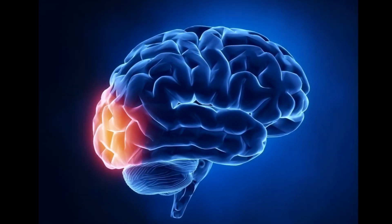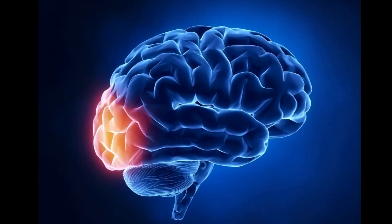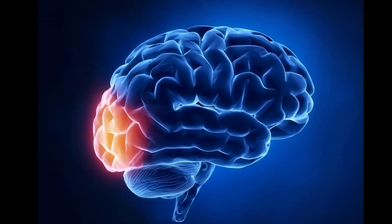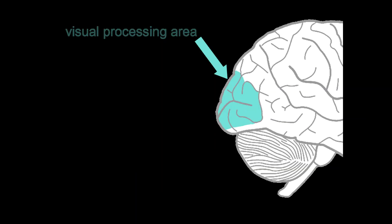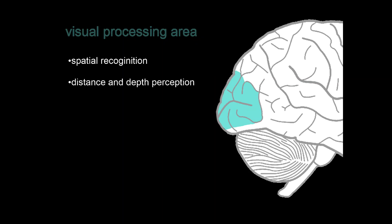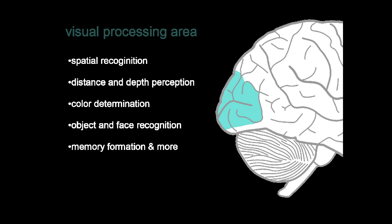The occipital lobe is the smallest of the four lobes of the cerebral hemisphere. It is the visual processing area of the brain, and is responsible for spatial recognition, distance and depth perception, color determination, object and face recognition, and memory formation.